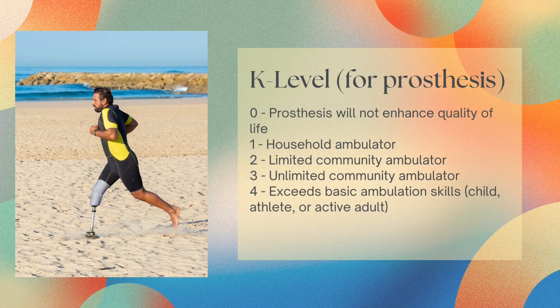Three is an unlimited community ambulator, and four is when the patient exceeds basic ambulation skills — so this will be an athlete, an active adult, or even a child.